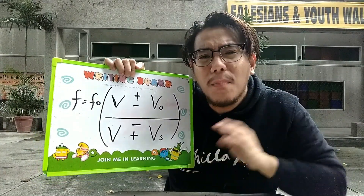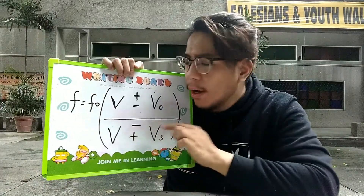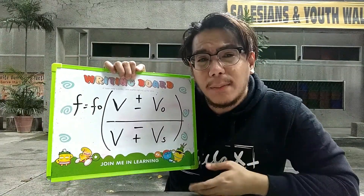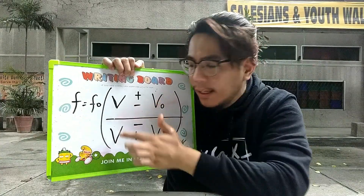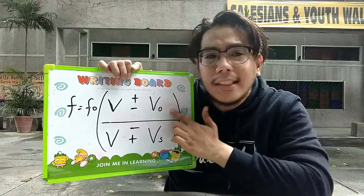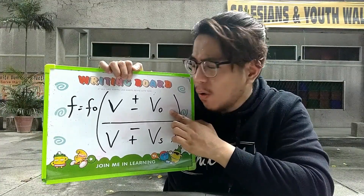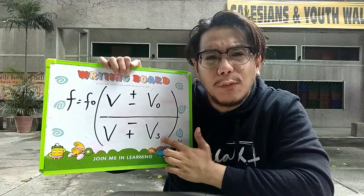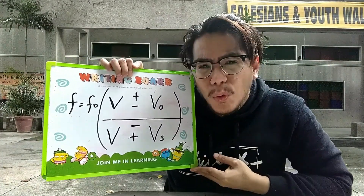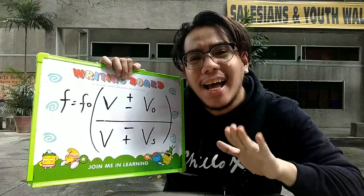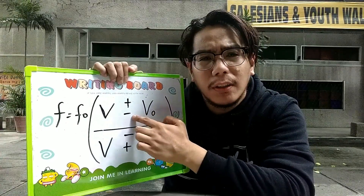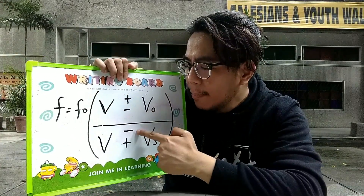Tatandaan natin na itong formula na ito mayroon siyang mga elements. Yung FO — yung O stands for the observer, the listener, or the receiver. Yung V is the velocity of sound. And DO meaning to say it is the observer, receiver, or the listener. And the VS stands for the velocity of the source — kung saan gagaling yung tunog. Dapat tatandaan natin yung mga symbols. Katulad nito, sa numerator, may plus and minus. At sa denominator naman, may minus at plus.